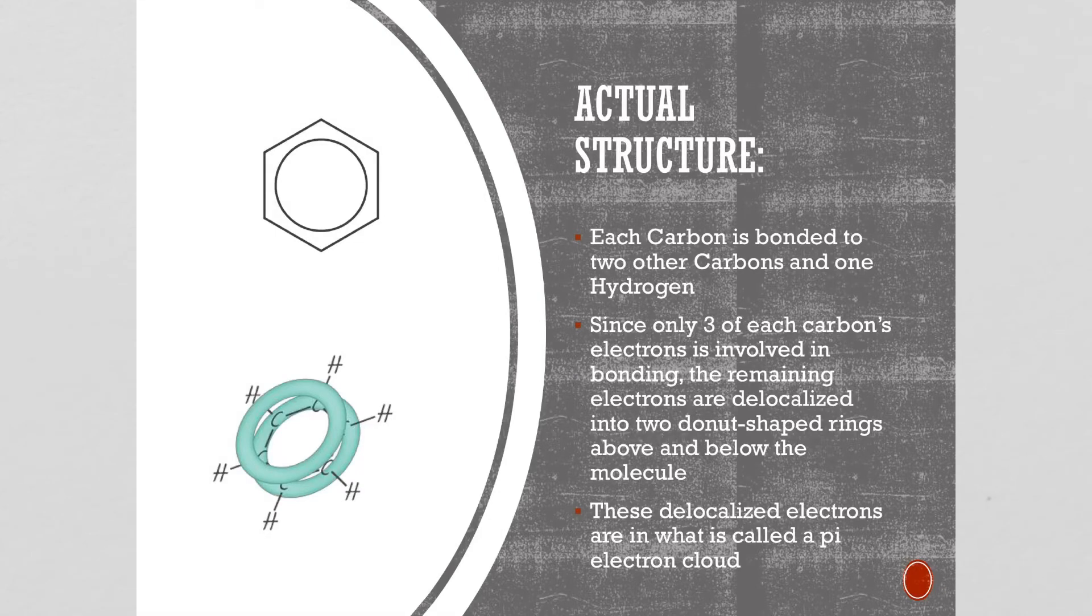The actual structure for benzene is that you have each carbon bonded to two other carbons and one hydrogen and that would be in a trigonal planar arrangement. Since only three of each carbon's electrons is involved in bonding the remaining electrons are just delocalized into two donut shaped rings both above and below the plane of the molecule. These delocalized electrons are in what is called a pi electron cloud or a delocalized pi electron cloud.